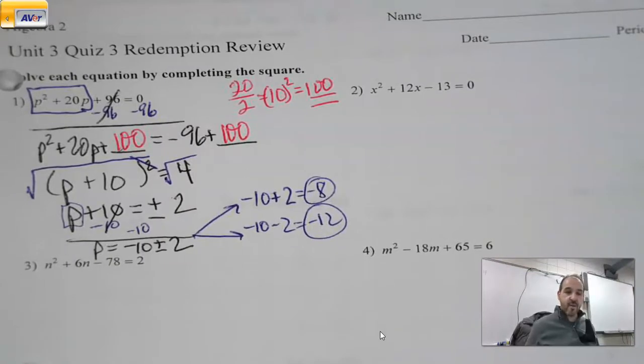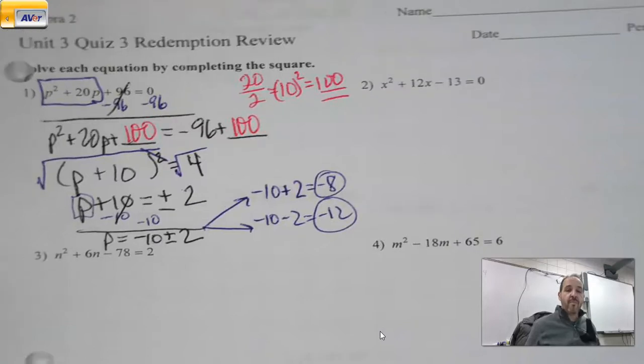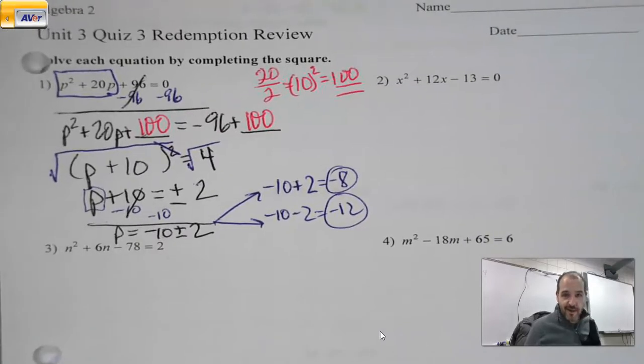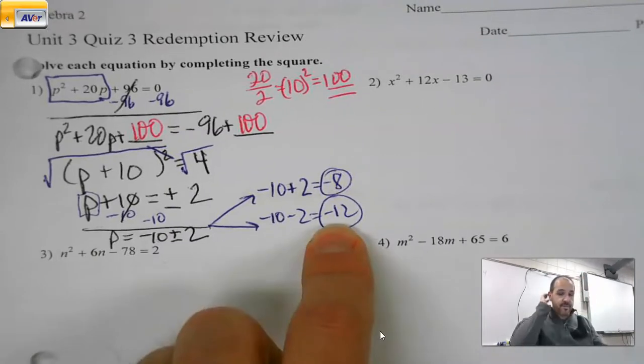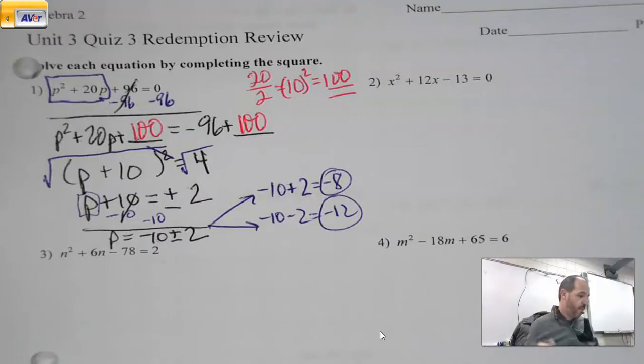Remember, these are quadratics, there's going to be two answers. So I do plus minus here. What's the square root of four? Two. I want to get P alone. I'm going to minus 10. That plus minus I put in front of my two is like a wall. So P equals negative 10 plus or minus two. Sometimes it's okay to leave it that way, but this is not one of them because there's no radicals here. I can actually do negative 10 plus two and negative 10 minus two.